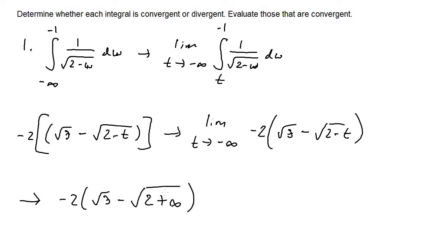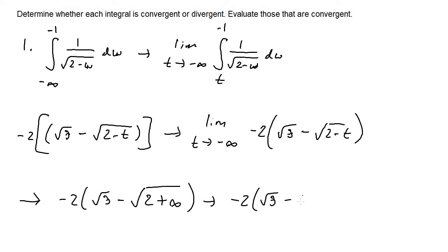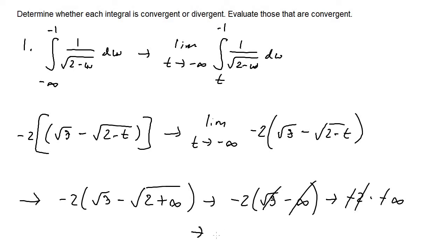Two plus infinity is just infinity, and the square root of infinity is still infinity. So we have negative two times the square root of three minus infinity. The square root of three is insignificant compared to infinity, so that becomes negative infinity. Then negative two times negative infinity gives infinity. Because the result is infinity, this integral diverges.